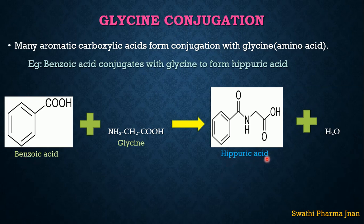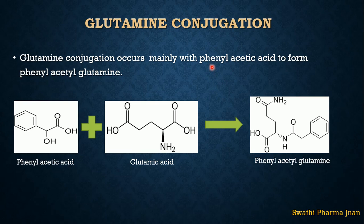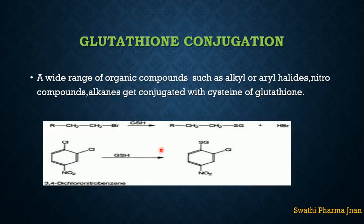Hippuric acid is water-soluble and easily excreted from the human body. The next type is glutamine conjugation, which occurs mainly with phenyl acetic acid. Phenyl acetic acid will preferably react with glutamic acid and undergo glutamine conjugation to form phenyl acetyl glutamine.